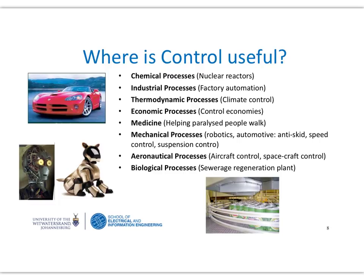Where is control useful? In chemical processes, nuclear reactors where temperature and vibrations have to be controlled, thermodynamic processes like climate control, factory processes where you have to control conveyor belts and dispensing systems, and in aeronautical processes such as aircraft control. When the pilot puts the aeroplane on autopilot, that's a very sophisticated control system working to make sure the plane keeps flying at the correct height and in the correct direction.